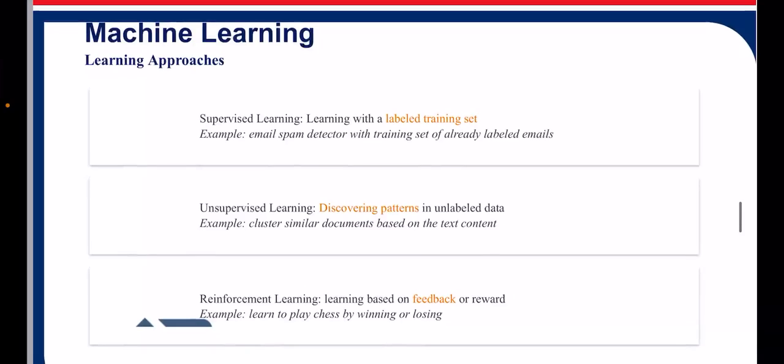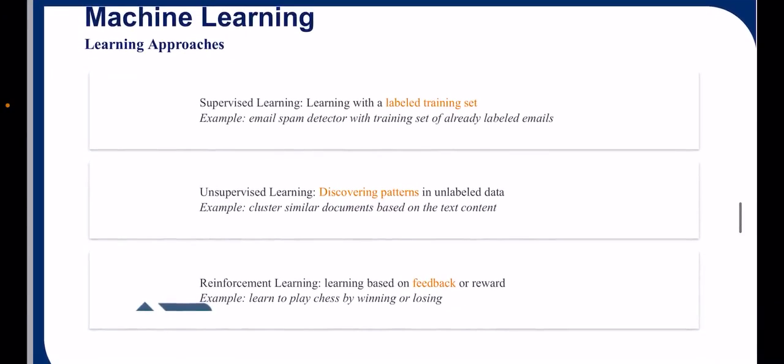There are three types of machine learning approaches: supervised, unsupervised, and reinforcement. We are going to talk about reinforcement learning, in which learning is based on feedback or reward.